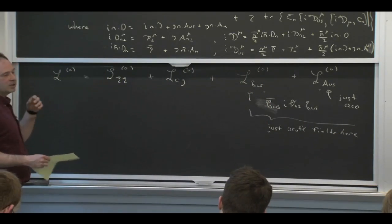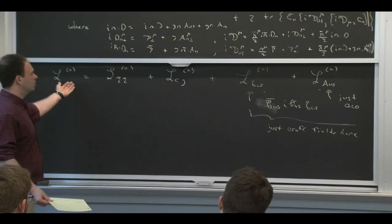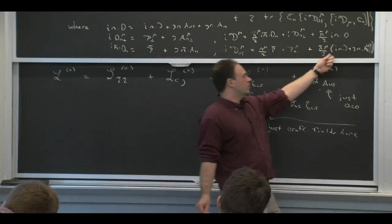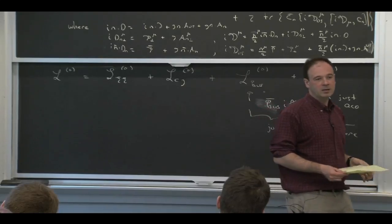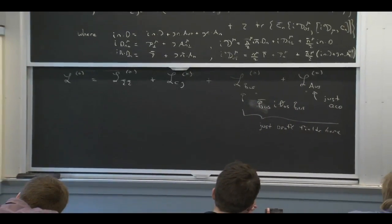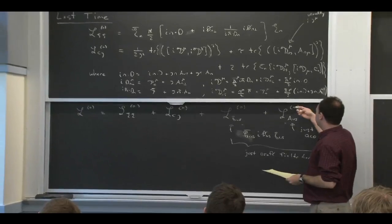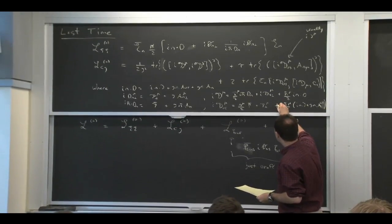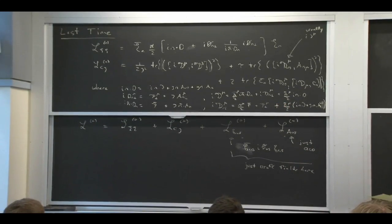So the only place when you take everything here together, the only place that the ultrasoft and collinear fields talk to each other in the Lagrangian is in this single component, n dot partial, n dot a ultrasoft. And that comes about basically because of the power counting, that this is really the only place that these two things can interact.